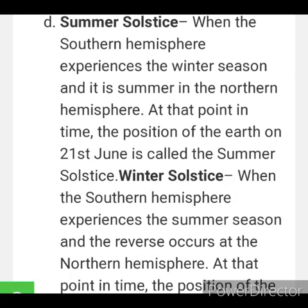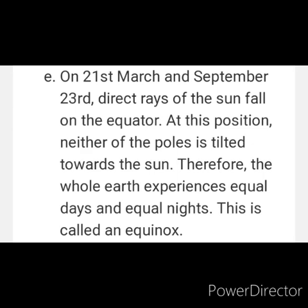Answer D — Summer solstice: when the Southern Hemisphere experiences winter and it is summer in the Northern Hemisphere, the position of the Earth on 21st June is called the summer solstice. Winter solstice: when the Southern Hemisphere experiences summer and it is winter in the Northern Hemisphere, that position is called the winter solstice. Answer E: On 21st March and September 23rd, direct rays of the Sun fall on the equator. At this position, neither of the poles is tilted toward the Sun; therefore, the whole Earth experiences equal days and equal nights. This is called an equinox.